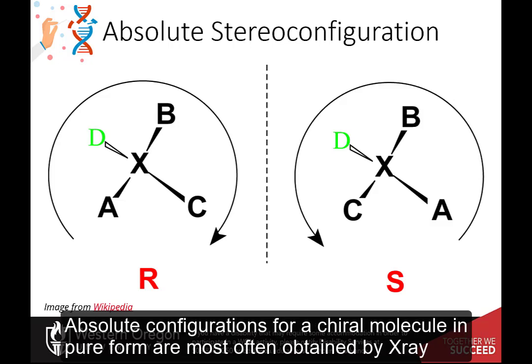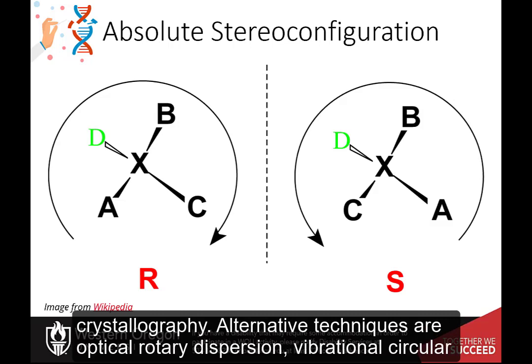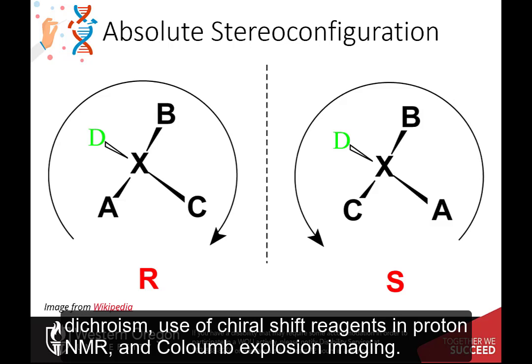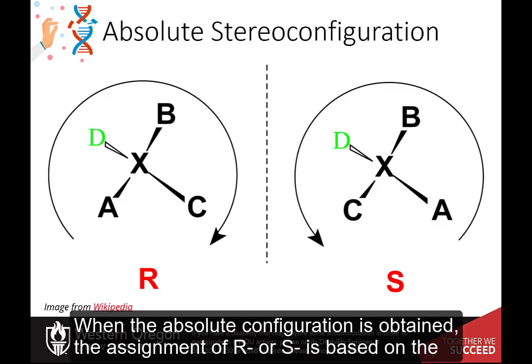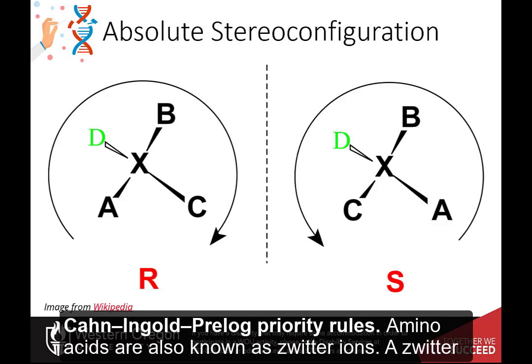An absolute configuration refers to the spatial arrangement of the atoms of a chiral molecule and its stereochemical description, such as R or S, referring to rectus or sinister, respectively. Absolute configurations for a chiral molecule in pure form are most often obtained by X-ray crystallography. Alternative techniques are optical rotary dispersion, vibrational circular dichroism, use of chiral shift reagents in proton NMR, and Coulomb explosion imaging. When the absolute configuration is obtained, the assignment of R or S is based on the Kahn-Ingold-Prelog priority rules.